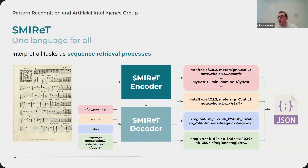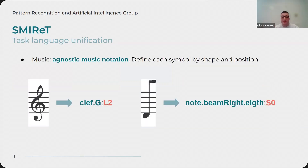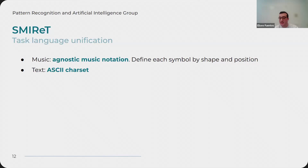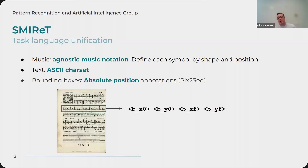Everything can be converted to a JSON file, which is usable by the end user. We expect this, in a more application-oriented setting, to be used in music processing software. To join everything into a common language for music, we use agnostic encoding, which defines music by the shape and position in the staff. Text is defined as ASCII target, with character-by-character prediction. For bounding boxes of layout, we use the PIX2SEC approach, which uses absolute position annotations on pages.